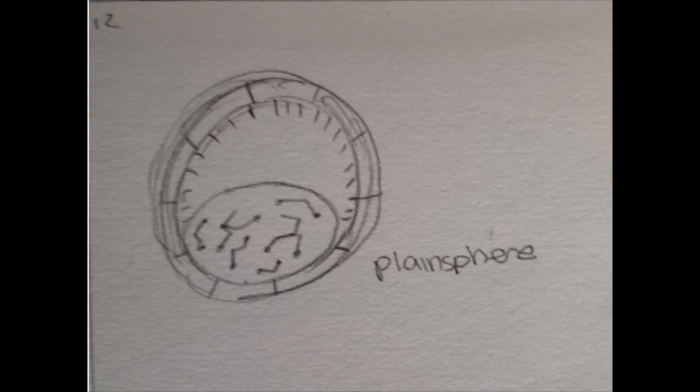The second instrument used was a planisphere projection, which represented the celestial sphere on a flat surface.